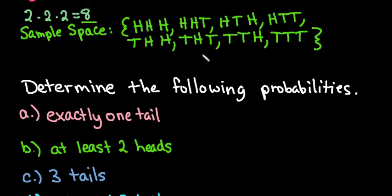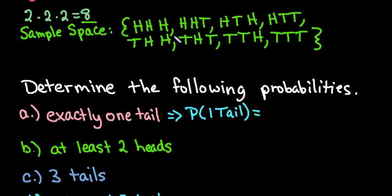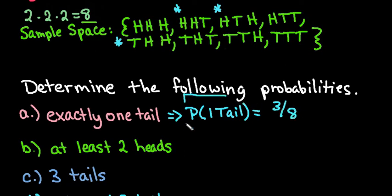We can use the sample space to determine probabilities. The first one is exactly one tail. Going through the list: the first outcome has none, the second has exactly one, the third has exactly one, the fourth has two so it doesn't count, the fifth has exactly one, and the last three have two, two, and three. So there are only three out of eight that give exactly one tail. The probability of exactly one tail is three out of eight.